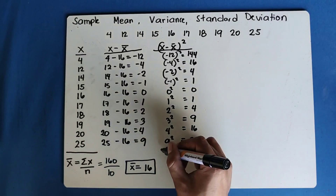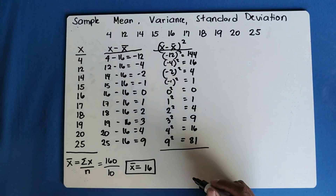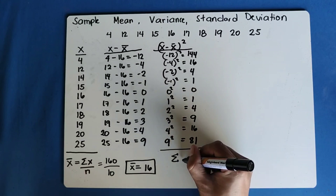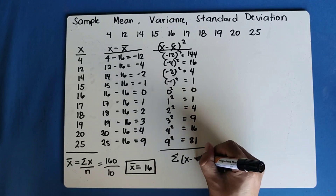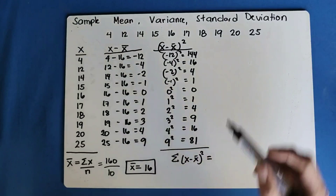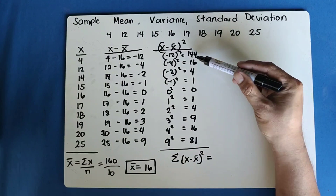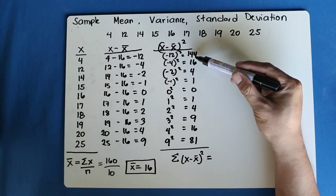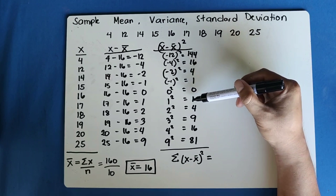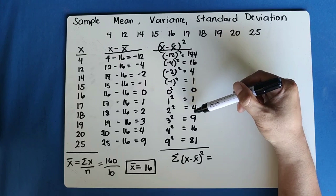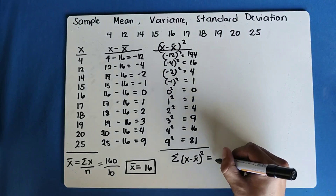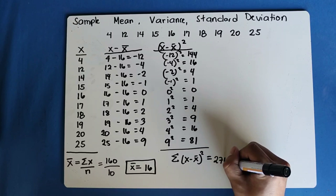Now we are going to add — let's find the sum. The summation of (x minus mean) squared is: 144 plus 16 plus 4 plus 1 plus 0 plus 1 plus 4 plus 9 plus 16 plus 81. The result is 276.